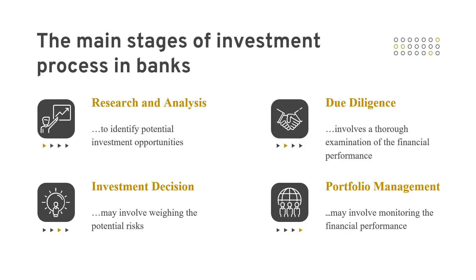The first chapter covers the main stages of investment processes in banks. The investment process is a complex, multi-stage process. The main stages typically include: research and analysis — for example, a bank may conduct research to identify potential investment opportunities in the renewable energy sector; due diligence — a bank may conduct due diligence on a renewable energy company it is considering investing in; and investment decisions — the bank considers factors such as potential return on investment, the level of risk, and the impact on the bank's overall portfolio.